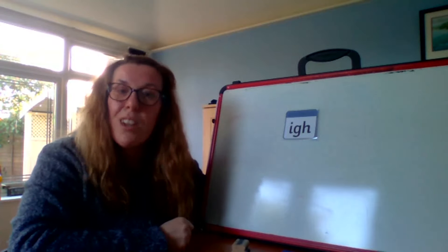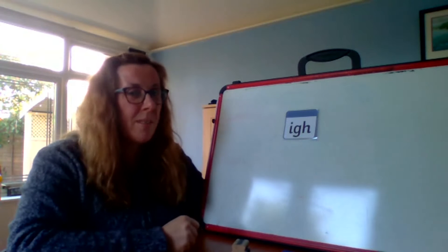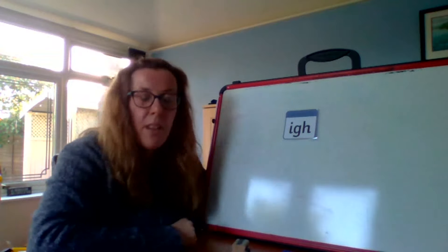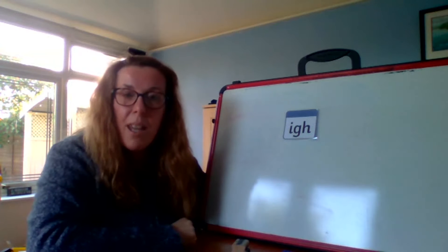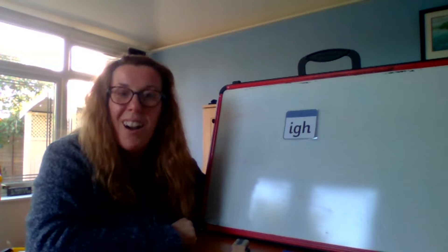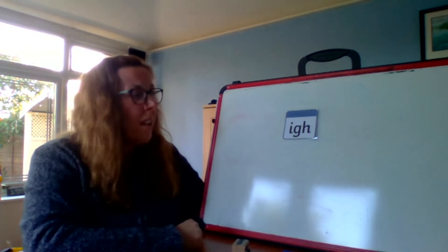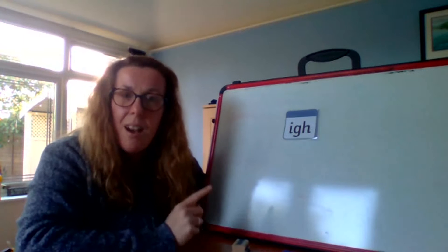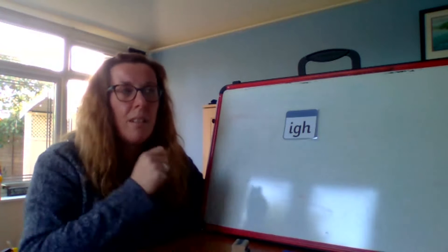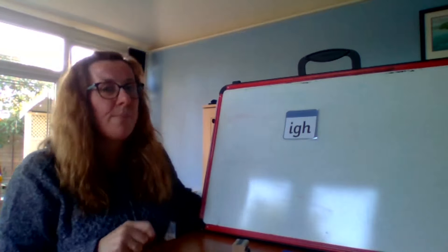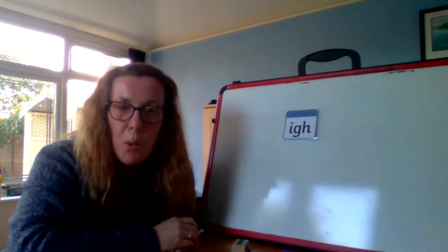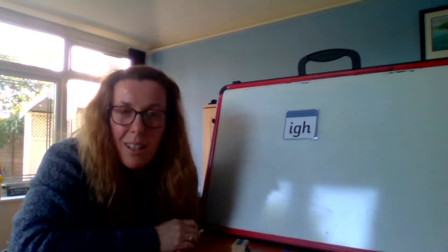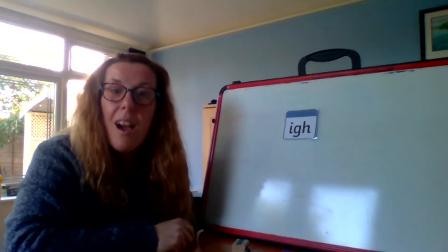Can you all say trigraph? Trigraph. Well done. And this trigraph makes the I phoneme. Can we all say I? I. Well done, children. What words do you know that has the I phoneme in it? Need to have a good think of this, children. I know. What do we put on when it gets dark? We put on the light. Well done.